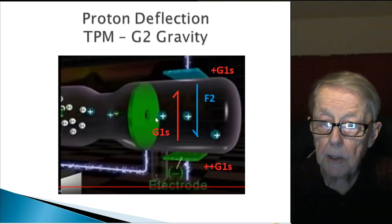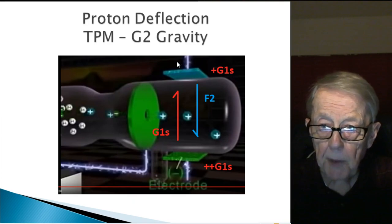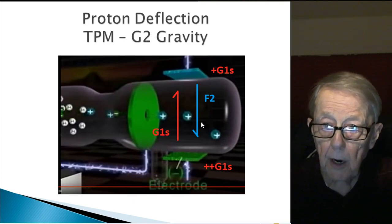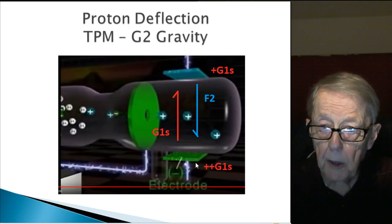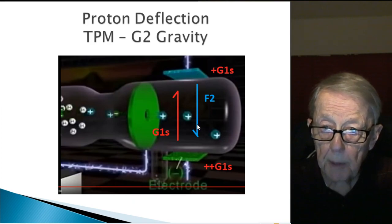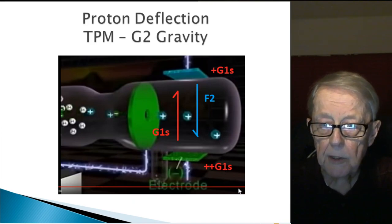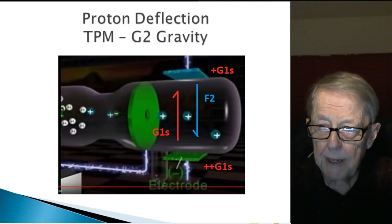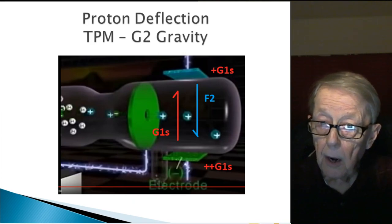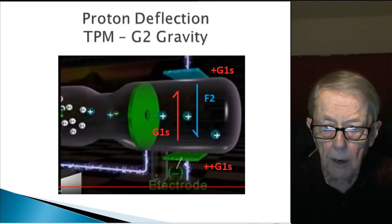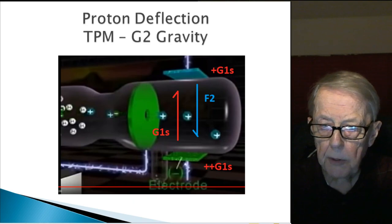And if you want to show deflection, you've got the same thing all over again. You've got G1 particles flowing this, extra charge, a little bit of extra here, but that differential sets up a F2 force in this direction causing them to bend in that direction. Straightforward explanation, almost identical to the standard model, only the particle model uses G2 gravity, while the standard model uses charge.